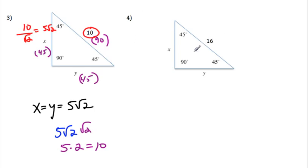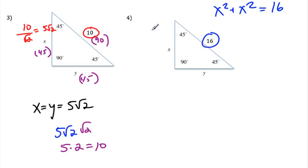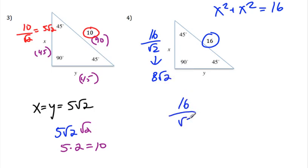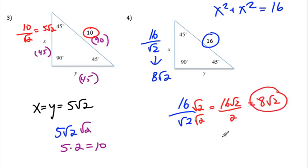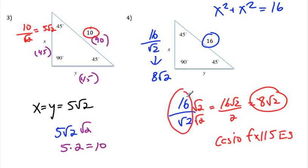Here they give us the side opposite the 90. You could say x squared plus x squared equals 16 and solve it out since x and y are equal. Or you can just divide by radical 2 going backwards. When you put 16 over radical 2 in the calculator, you get 8 radical 2. The way to do that by hand: multiply the top and bottom by radical 2, giving 16 radical 2 over 2, which equals 8 radical 2. I recommend the Casio FX 115 ES — it does this automatically.